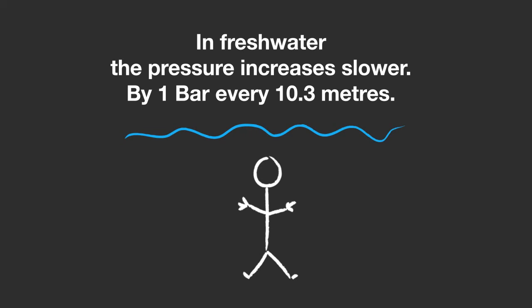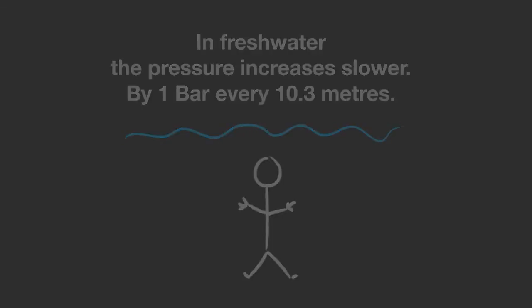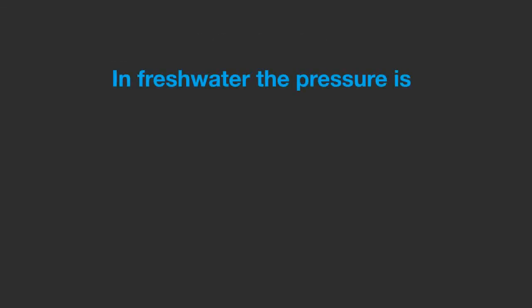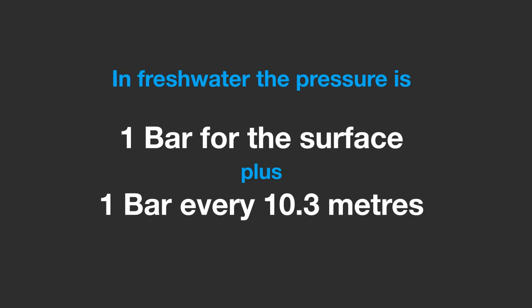So in freshwater, you have to go 10.3 meters deep to have 1 bar. In freshwater, the pressure is 1 bar for the surface and 1 bar for every 10.3 meters of water.